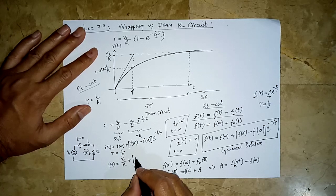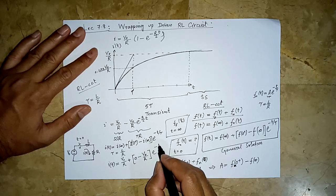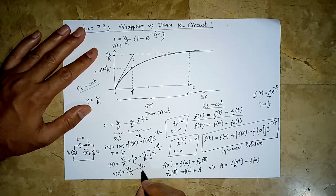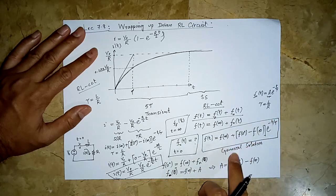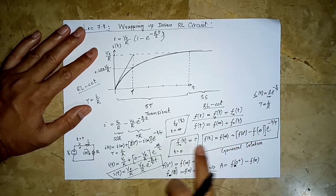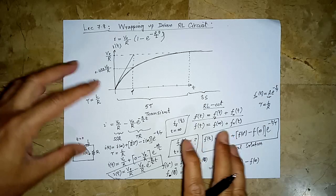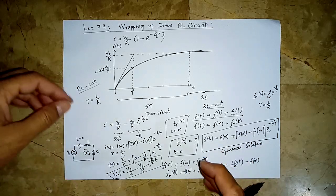So I(t) equals V0 over R plus, what is its initial value? Its initial value is 0 and its final value is V0 over R. So I(t) equals V0 over R plus (0 minus V0/R) times e raised to the power minus R over L times T. Simplifying: I(t) = V0/R minus V0/R times e^(-Rt/L). There is no difficulty in this — it is very easy. The general solution helps us with these circuits, and in the next video I am going to use the general solution for the capacitor without writing KVL.